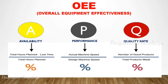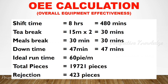OEE calculation — let's look at an example. Shift time is 8 hours, that is 480 minutes. There are two tea breaks of 15 minutes each, so 2 times 15 equals 30 minutes. Meals break is 30 minutes. The downtime — due to material shortage or machine breakdown — is 47 minutes. The ideal runtime is 60 pieces produced per minute. The actual output is 19,721 pieces, and rejected parts are 423 pieces.